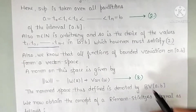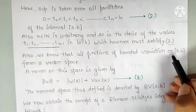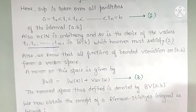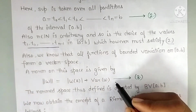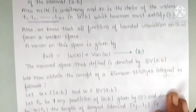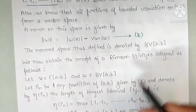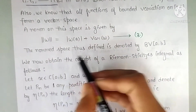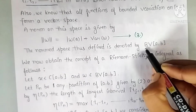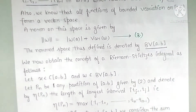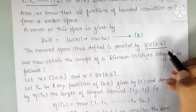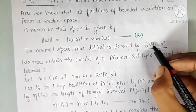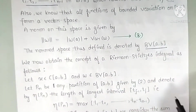We also know that all functions of bounded variation on [a,b] form a vector space. The norm on this vector space is defined in a specific way, and this normed space is denoted BV[a,b] — standing for bounded variation on the closed interval [a,b].